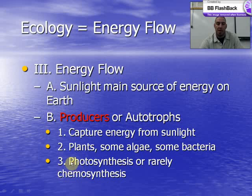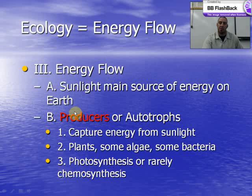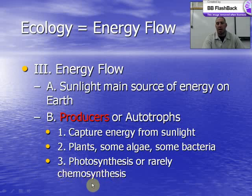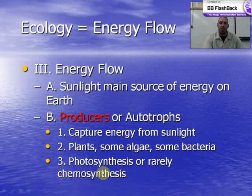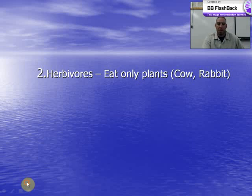Some green algae, bacteria, and phytoplankton are also in this realm of photosynthesis. There are two types of producers: photosynthetic organisms and chemosynthetic organisms, which convert things like methane and sulfur dioxide into energy via chemosynthesis.